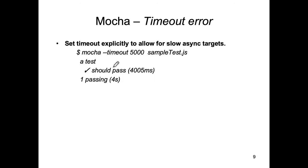So those are the two issues: the timeouts are important because we're testing something asynchronous in nature, and the use of this special `done` function allows us to tell Mocha to wait until our asynchronous target has responded back with a response and we have evaluated that response by means of our expectation statements.